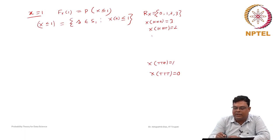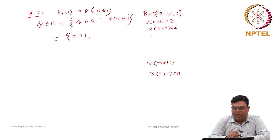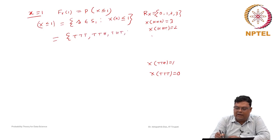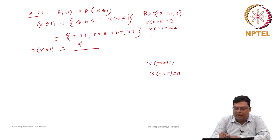Now for x less than or equal to 1, the random variable can take value 1 or 0 — only two values satisfy this inequality. So the event {X ≤ 1} corresponds to: TTT (value 0), then TTH, THT, and HTT (each giving value 1). These are four equally likely points. Out of eight possible outcomes, four satisfy this condition, so the probability is 4/8 = 1/2.